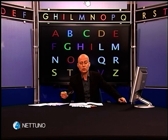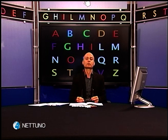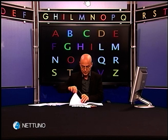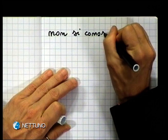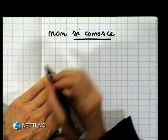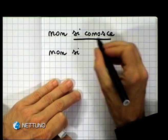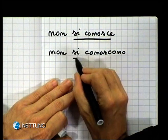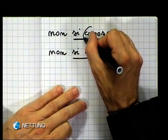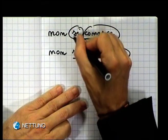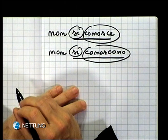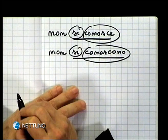Abbiamo visto un altro modo di formare il passivo. Ricordate questa parolina — si — come nell'esempio: non si conosce l'identità, non si conosce il nome. Attenzione però: si conosce è forma singolare, non si conoscono è forma plurale. Questa particella si è la stessa sia davanti alla forma singolare sia davanti alla forma plurale.